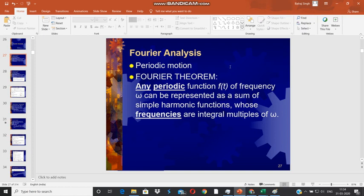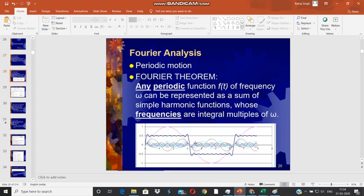Omega is the frequency of the source function. Now, graphically this can be represented in this fashion. If we have, say, a square wave, that square wave can be represented as individual harmonics whose frequencies are integral multiples of the frequency of the original square wave.